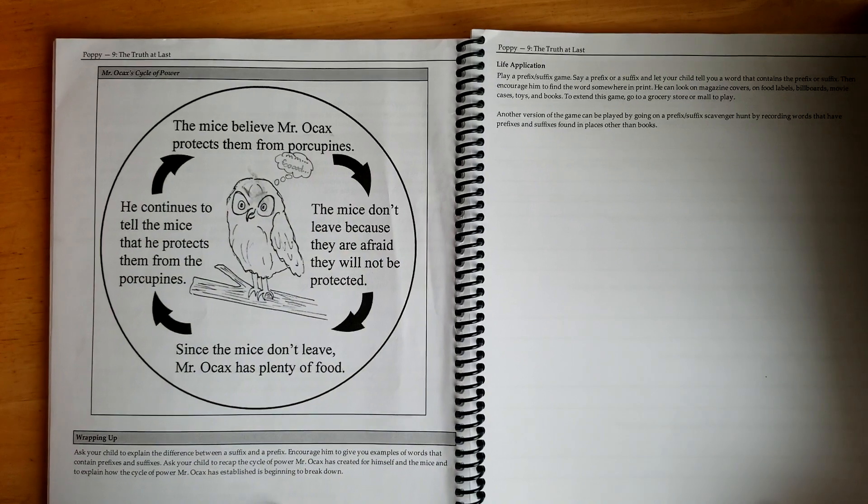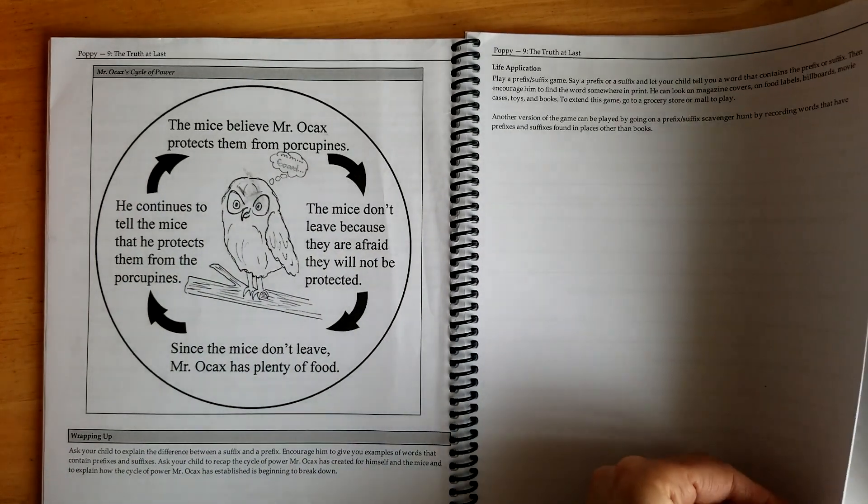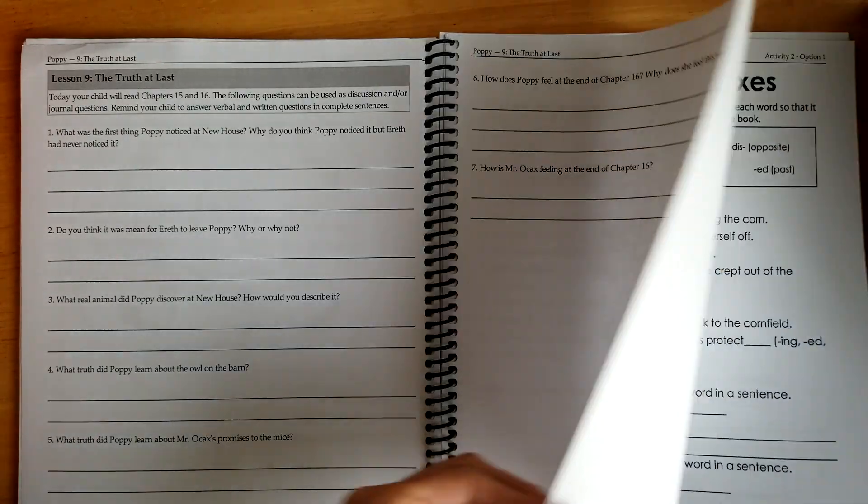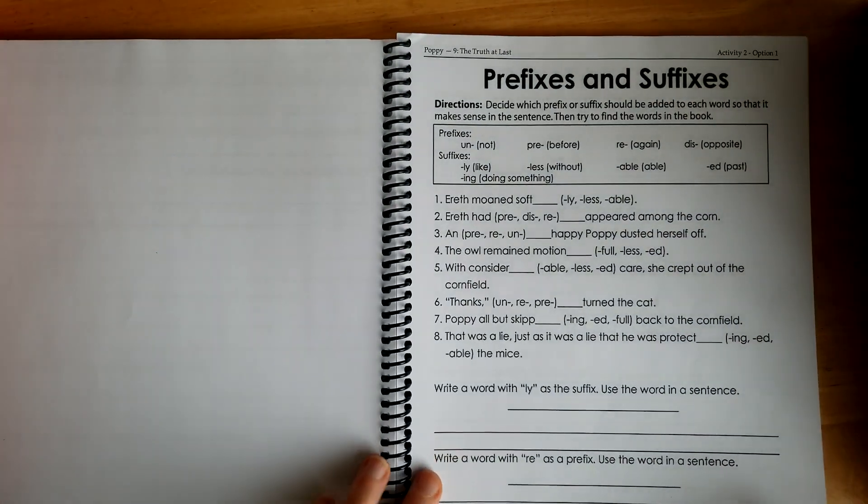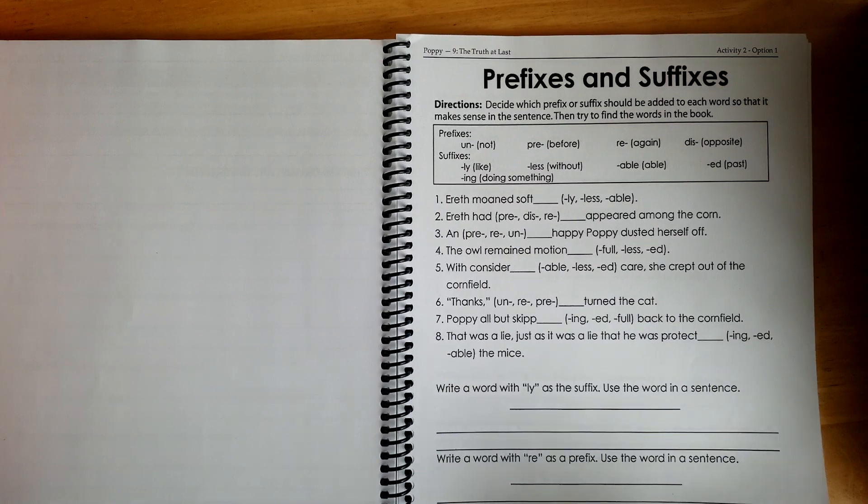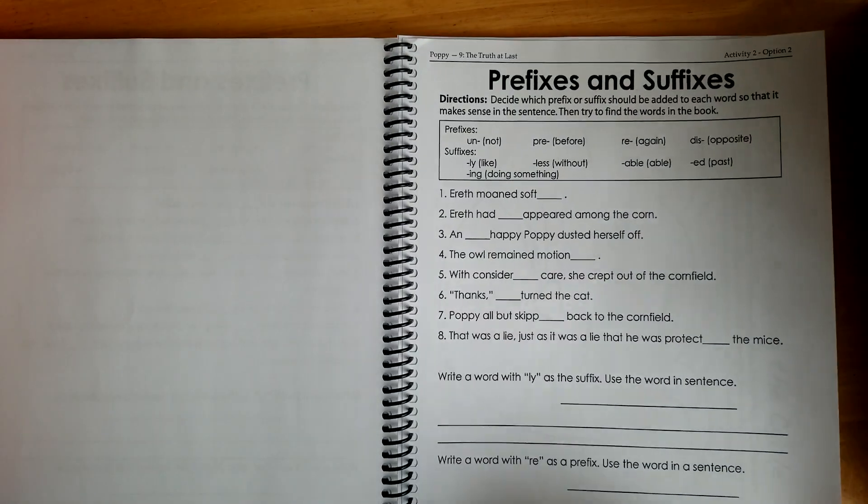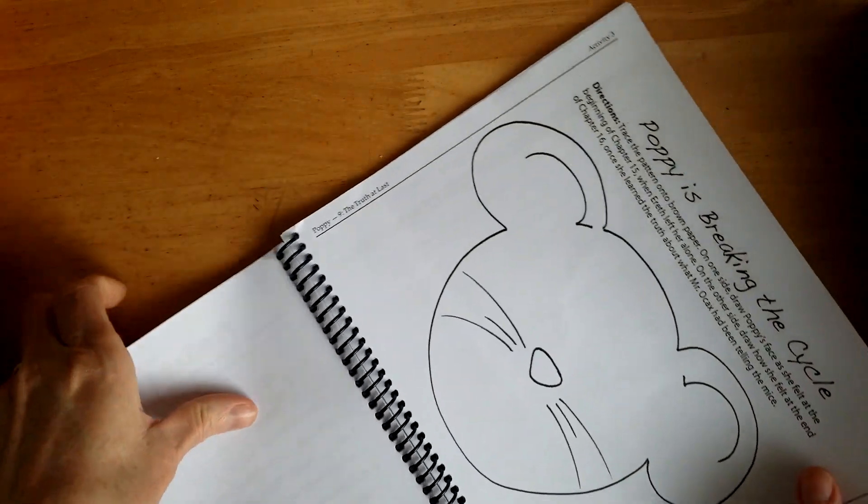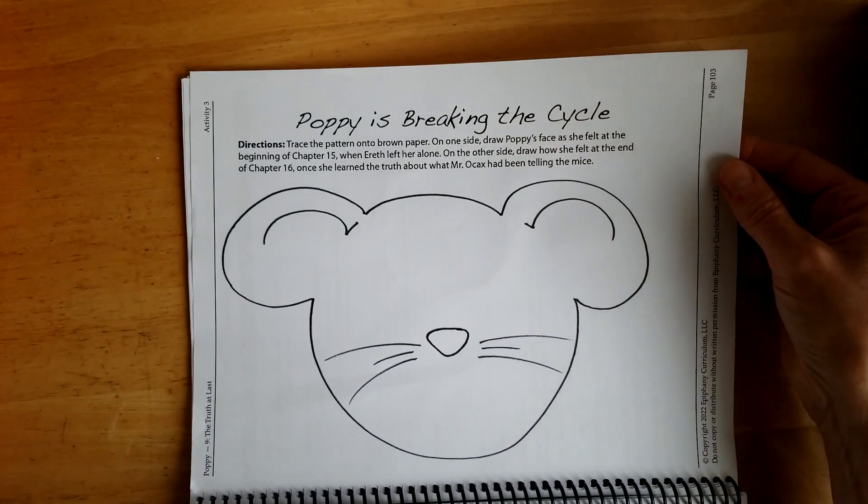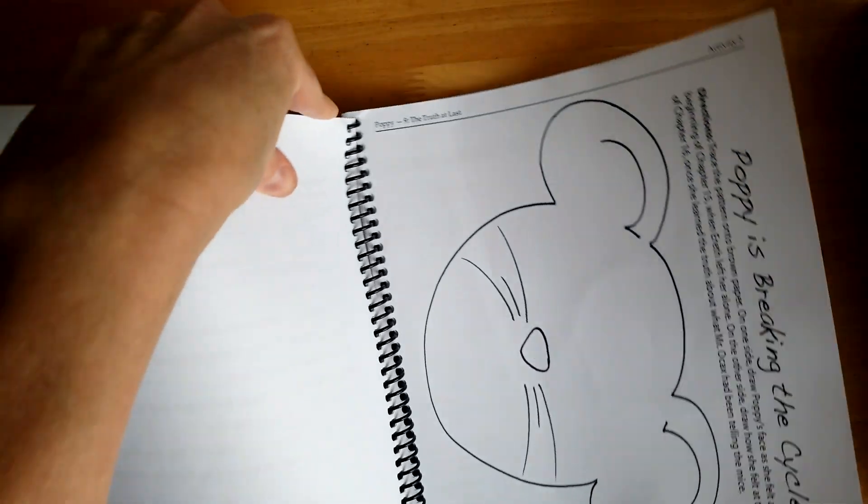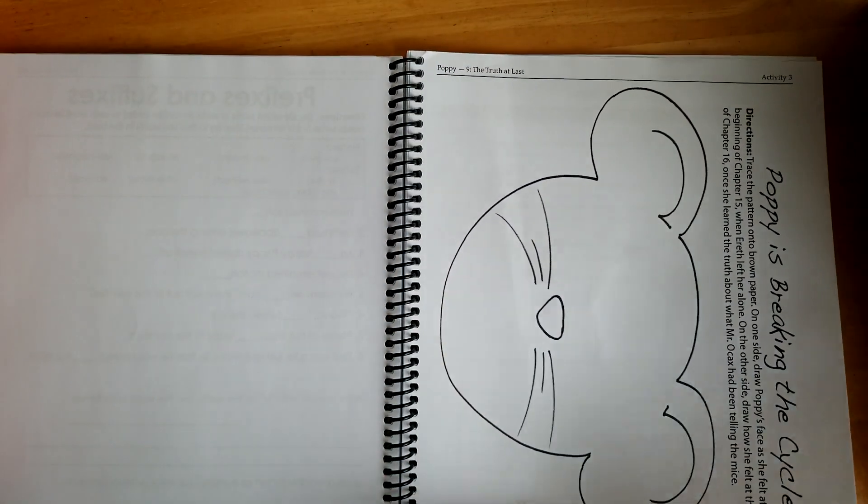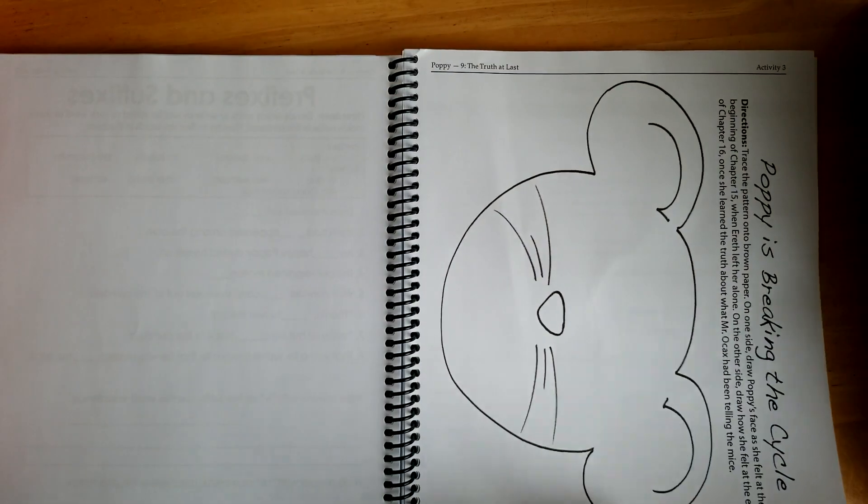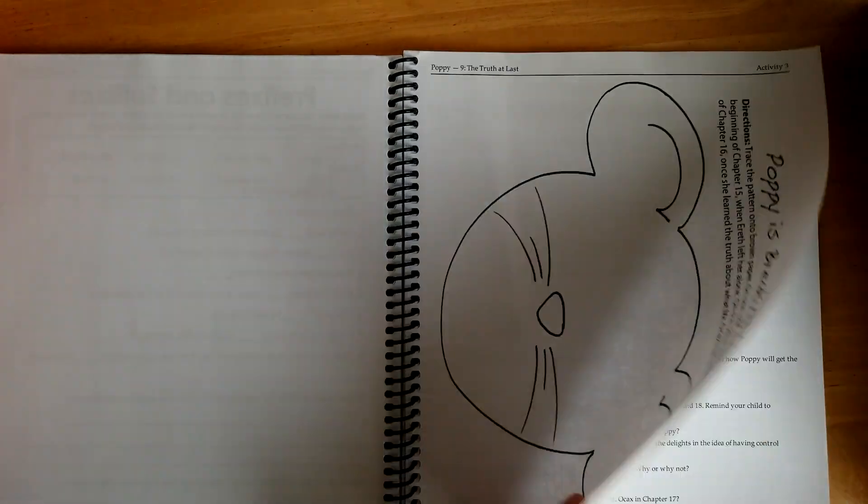This is the cycle of power that is within the story. More reading comprehension questions. Prefixes and suffixes. This is option one, option two. And then she got to make her face on here. We actually made copies and did it that way so I didn't have to muck up the book and I can resell it.